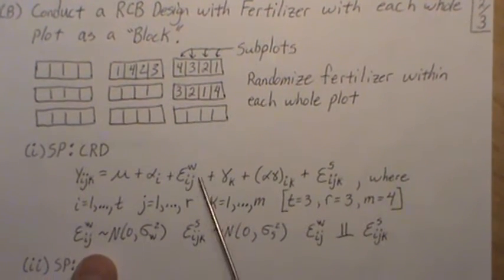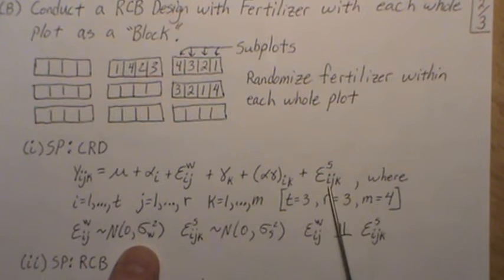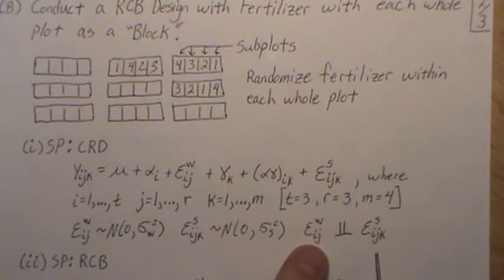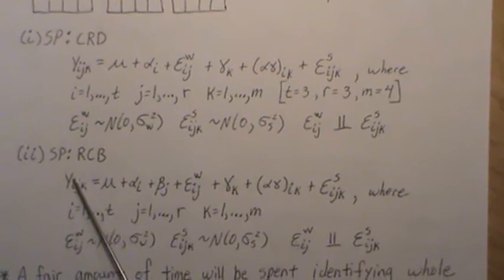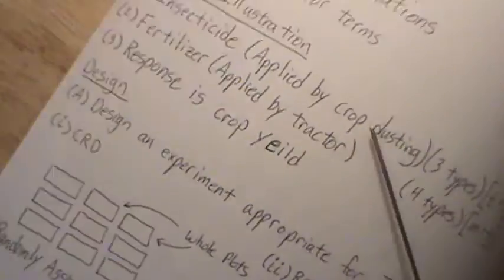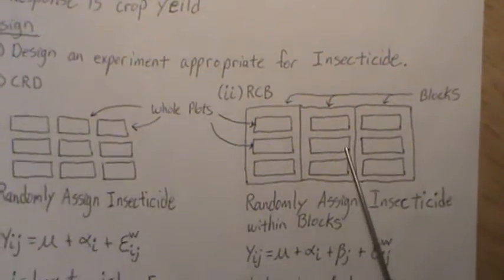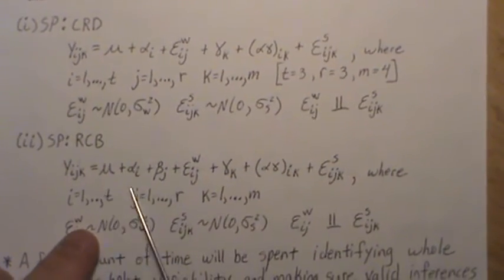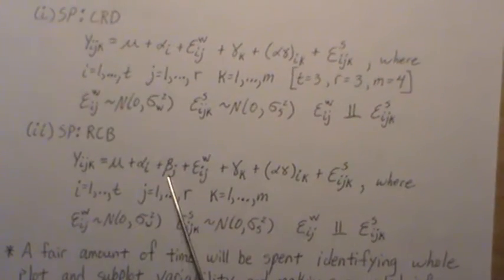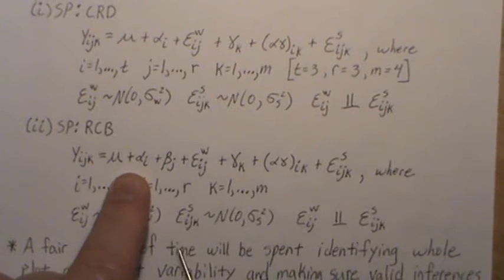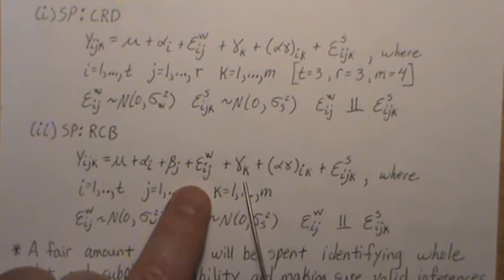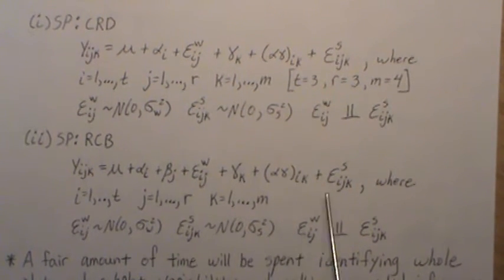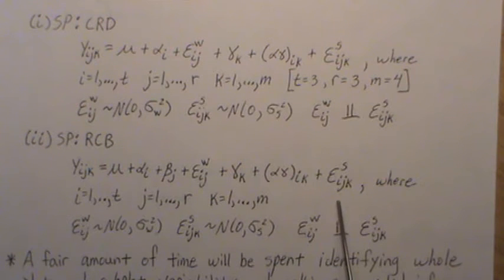The error terms are normally distributed with some variance, and errors are assumed independent. For the split plot randomized complete block design, the model is Y_ij = mu + alpha_i + beta_j (block effect) + whole plot error + gamma_k (fertilizer effect) + interaction effect + epsilon_ijks, which is the subplot or split plot error associated with the second randomization.